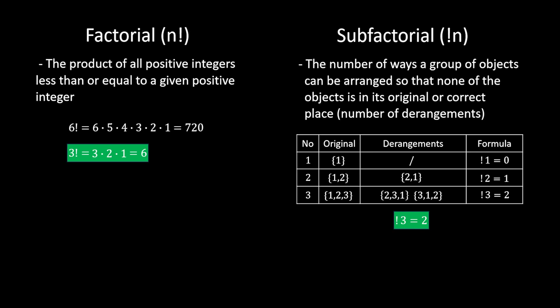Of course, if you want to find the sub-factorial of any number, you can use the formula, or the simpler version: sub-factorial of n equals the floor function of n! divided by e, where e is Euler's number, approximately 2.718.